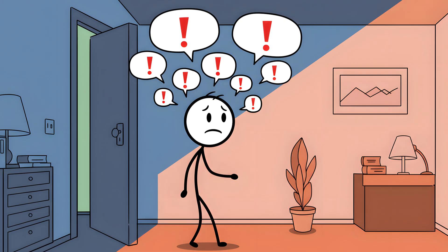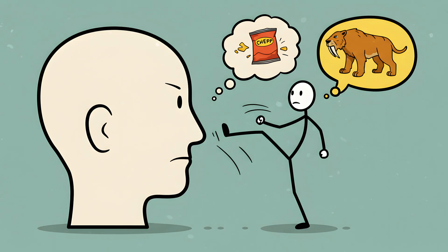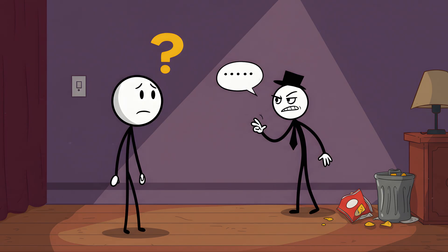Your brain assumes that the new environment will have its own set of urgent priorities. Maybe there's a saber-toothed tiger in the kitchen. Maybe the salsa has finally achieved sentience. The old thought is deemed non-essential and gets booted to make room for new, potentially more critical information. The problem is, the bouncer is a little too good at its job, and sometimes it throws out the one thought you actually wanted to keep.